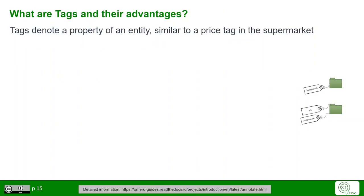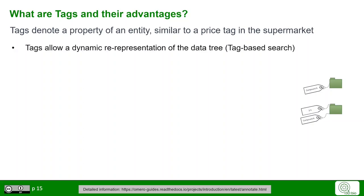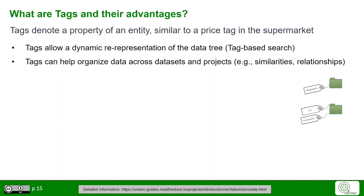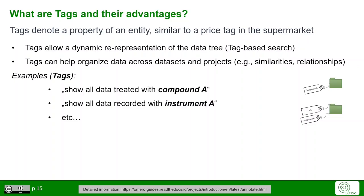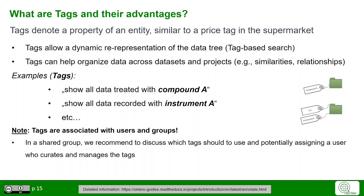Tags simply denote a property of an entity, like a price tag in the supermarket. However, in Omero, tags allow the dynamic re-representation of the data tree in the tag-based search, which we will explore a little bit later. Tags can help to organize data across datasets and projects — for example, to show similarities and relationships. That means you can make Omero simply show all the data of cells that have been treated with compound A, or show all the data that were recorded with a specific instrument, and so on. Tags are associated with users and groups, so for a shared group we recommend discussing which tags should be used and potentially assigning only a single user who manages and curates all the tags. For individual use of data, the tags can be used based on the user's preference alone.